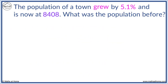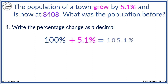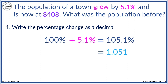The population of a town grew by 5.1% and is now 8,408. What was it before? We always start with 100% and this grew by 5.1%, which makes 105.1%. Dividing by 100, this decimal is 1.051.